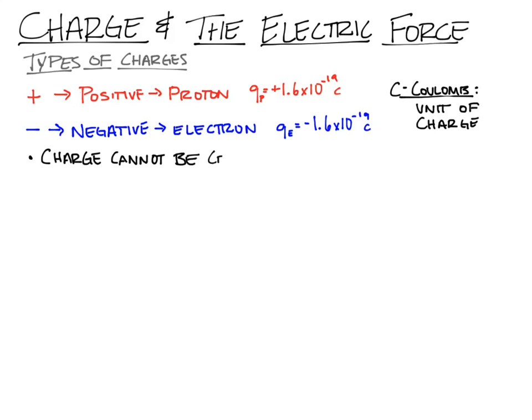One of the big rules we need to deal with is that charge cannot be created or destroyed. So when I charge an object, I'm not creating charge — I'm doing something different, and we'll talk about what that is. Another thing to keep in mind is that all objects contain charges. You, right now, though you may be overall neutrally charged, contain an equal amount of positive charge and negative charge.